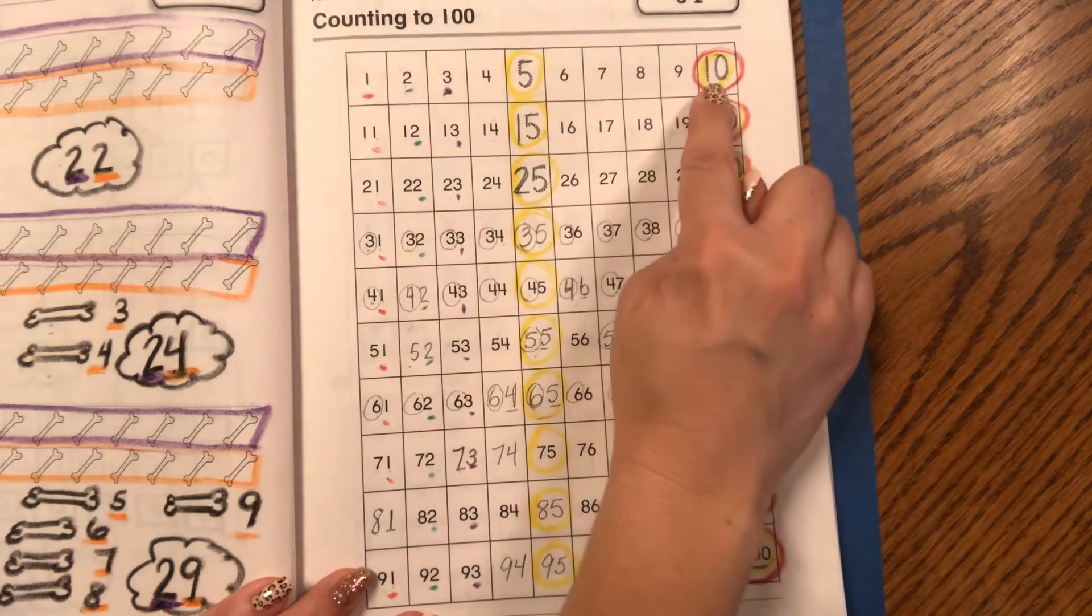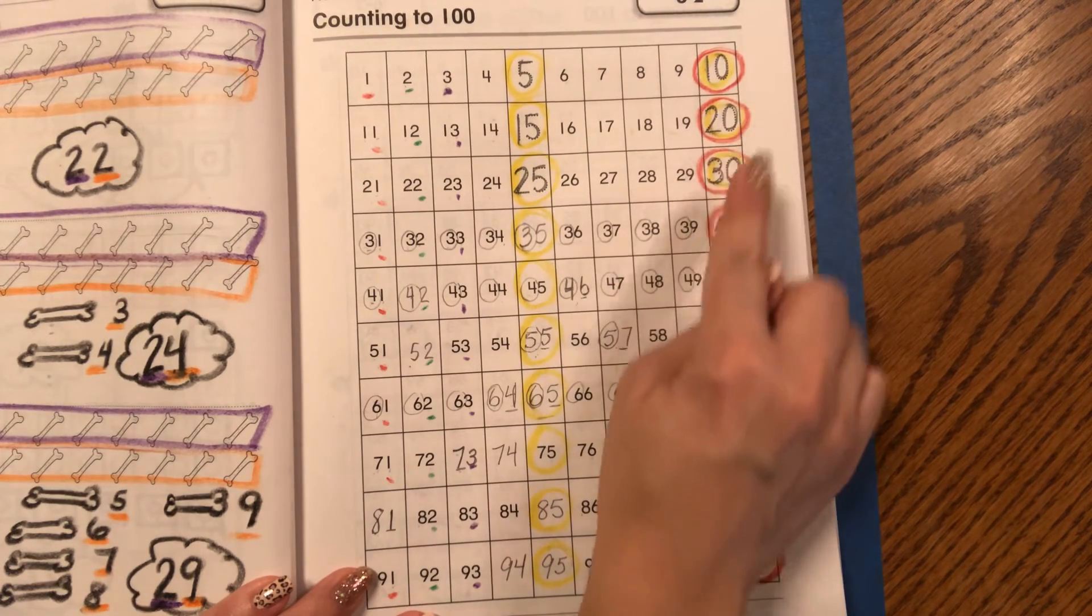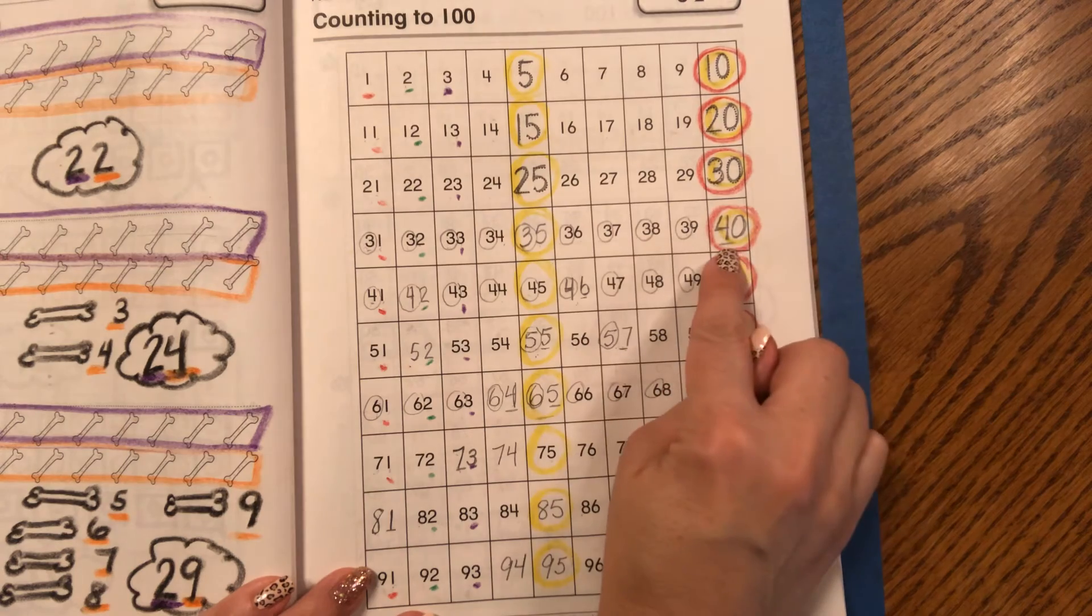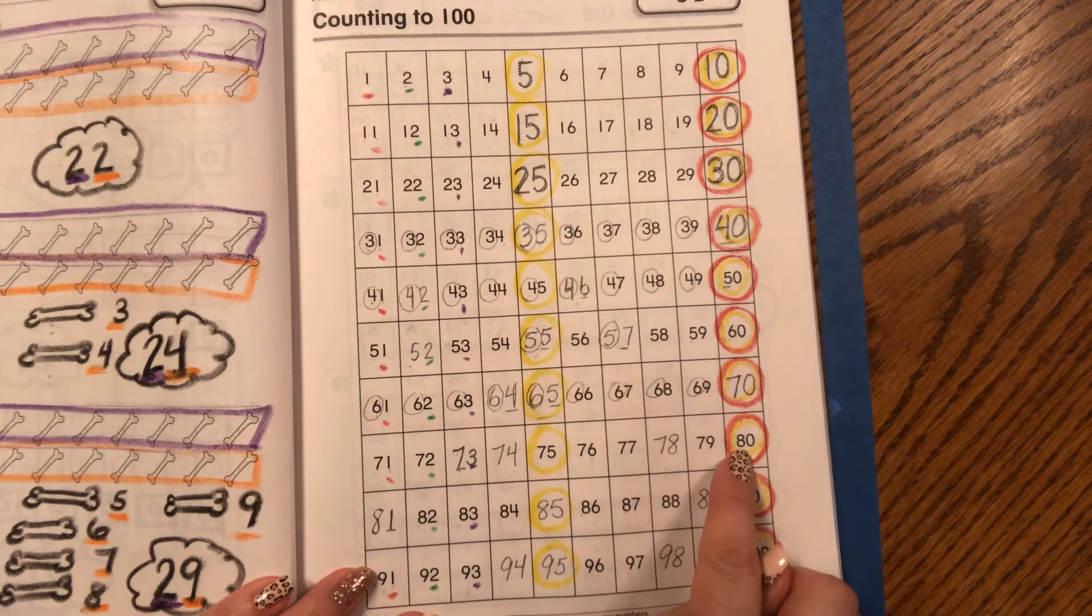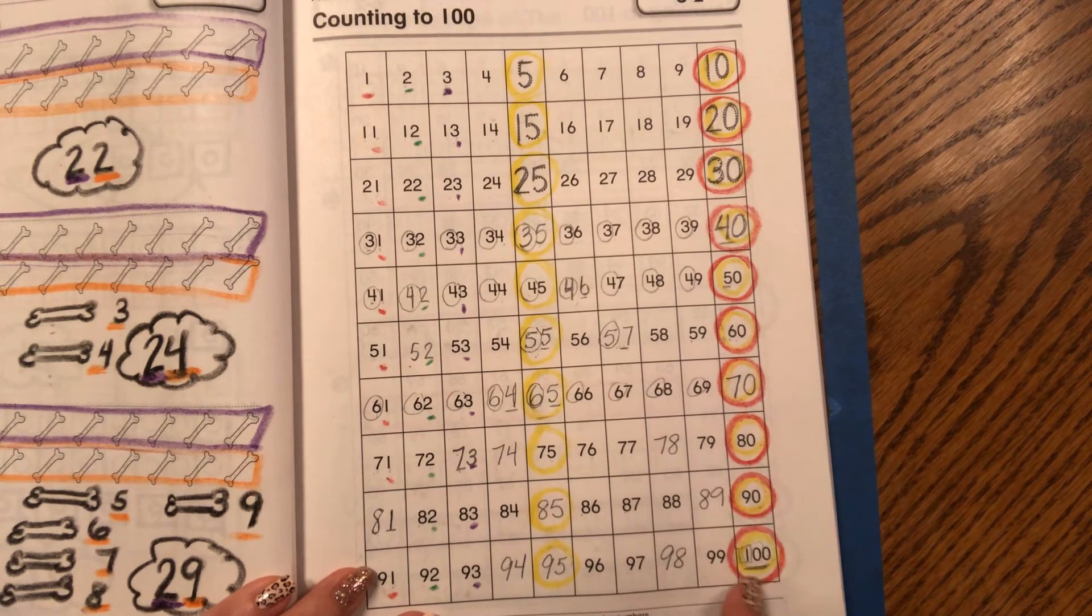Let's try it again. 10, 20, 30, 40, 50, 60, 70, 80, 90, 100.